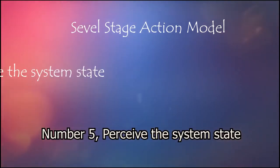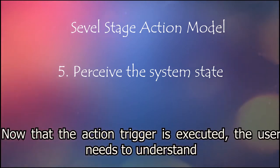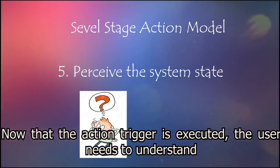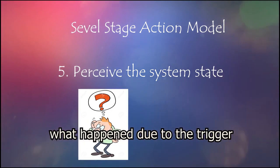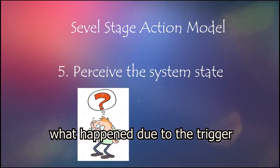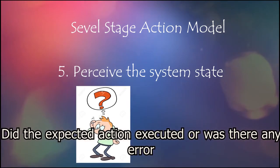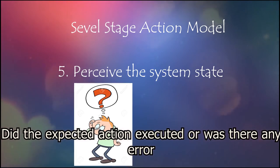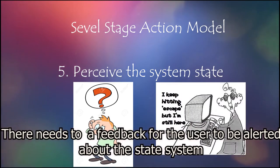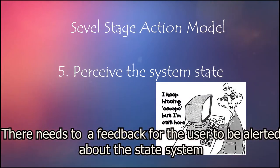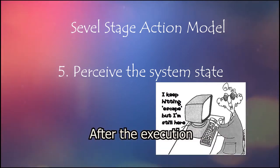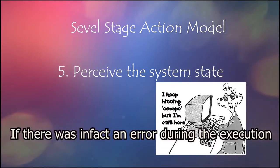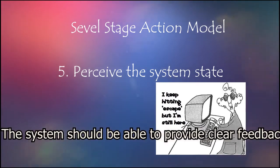Number 5: Perceive the system state. Now that the action trigger is executed, the user needs to understand what happened due to the trigger. Did the expected action execute, or was there a state of error during the execution? There needs to be feedback for the user to be alerted about the state of the system after the execution. If there was in fact an error, the system should be able to provide clear feedback.